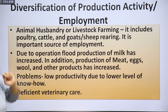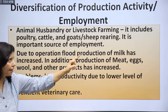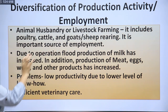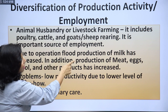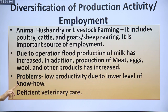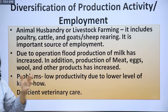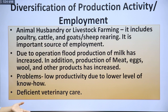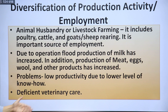Animal husbandry or livestock farming — including poultry, cattle, goat, and sheep rearing — is an important source of employment. Due to Operation Flood, production of milk has increased. Production of meat, eggs, wool, and other products has also increased, providing diversified employment in rural areas. Problems include low productivity due to low know-how — farmers don't know which animals to rear or how to care for them — and deficient veterinary care with insufficient hospitals and facilities for animal husbandry in India.